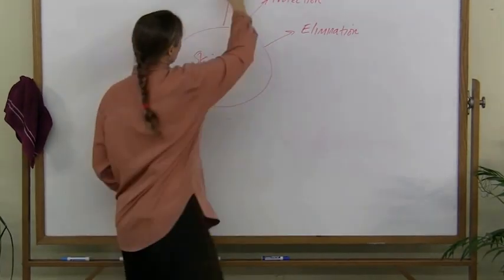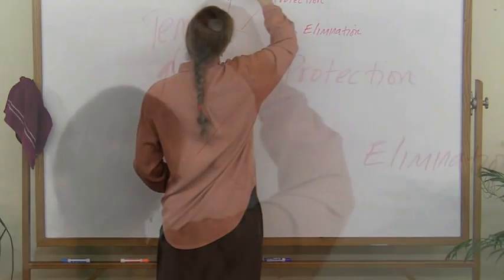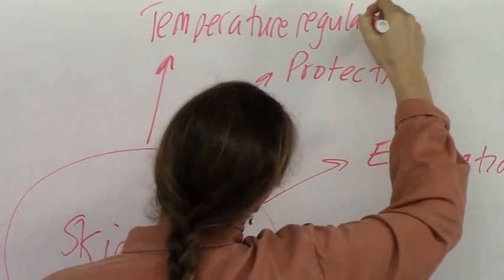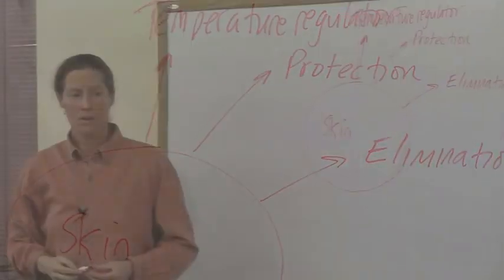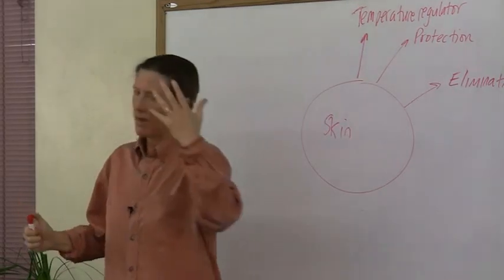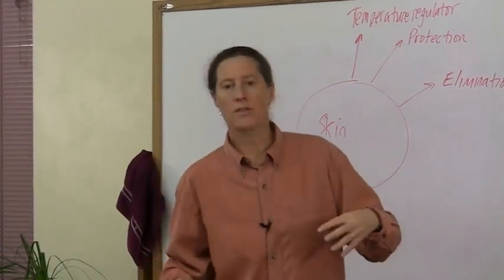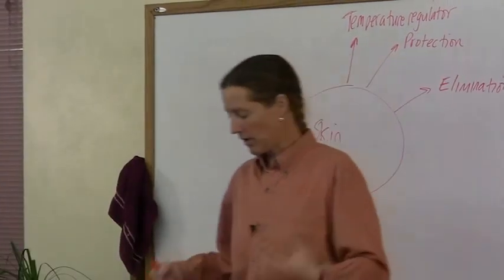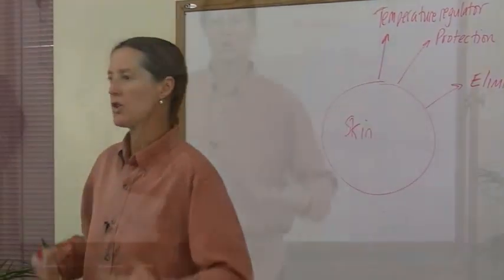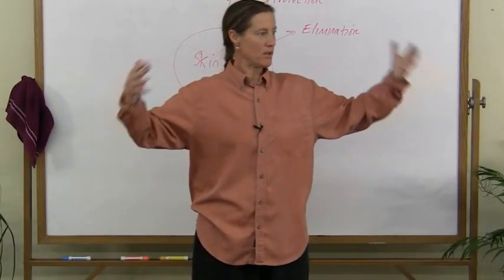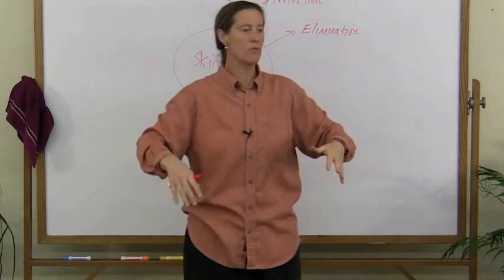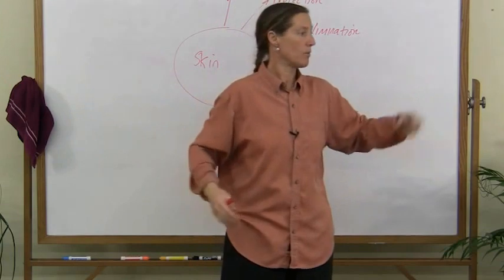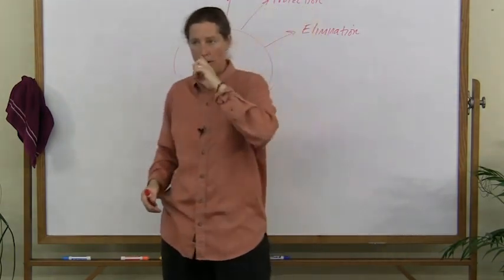It's also a temperature regulator. How do we do that? Really awesome: five to ten percent of all your blood is in your skin. So you're really hot, what does your body do? It shunts the blood to the surface, and your face turns red. The surface of your skin turns red because the blood's moved there, and you're going to get rid of the heat.